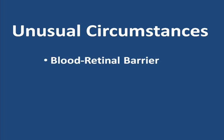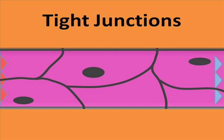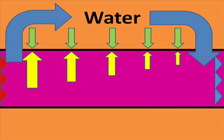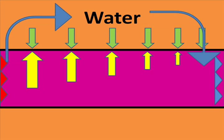You may recall that the retinal capillaries are the site of the inner blood retinal barrier. Tight junctions in between the endothelial cells make it much more difficult for water to pass out of, or into, the capillary.